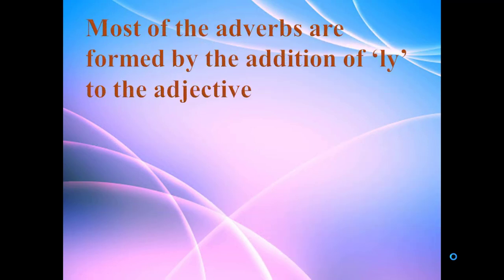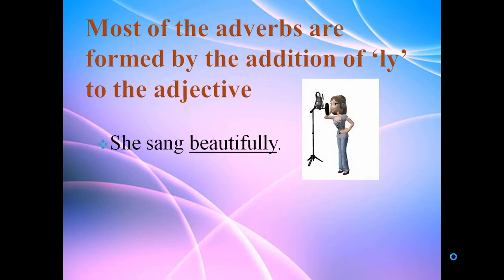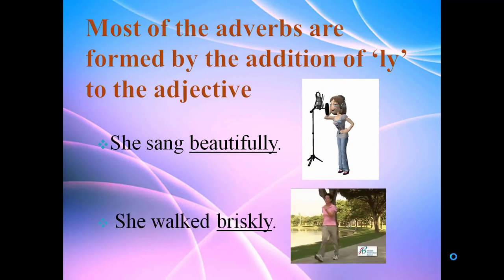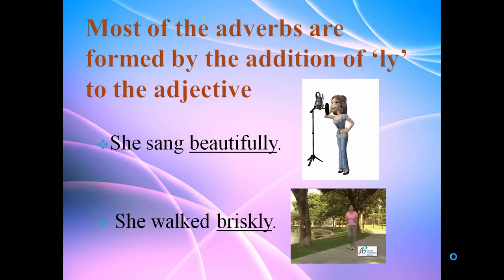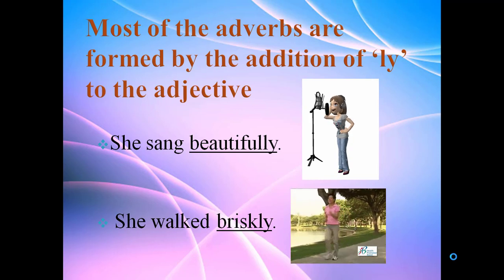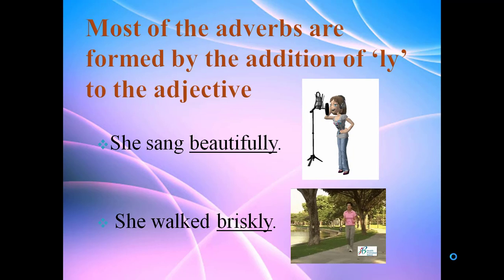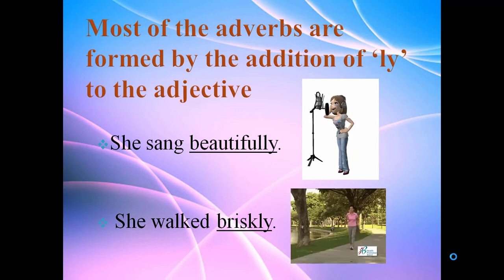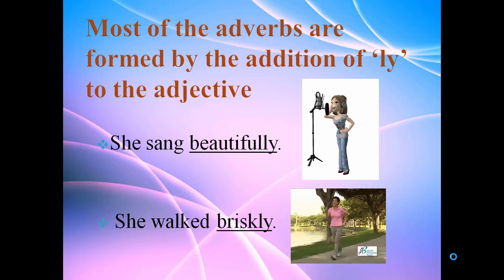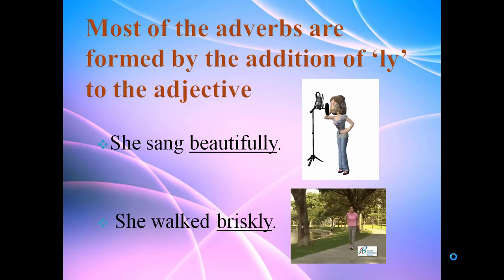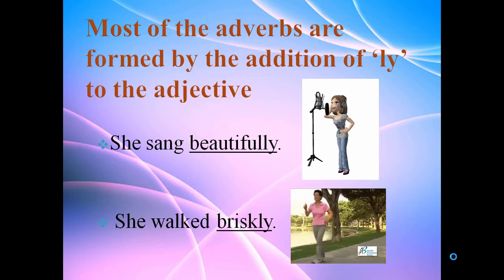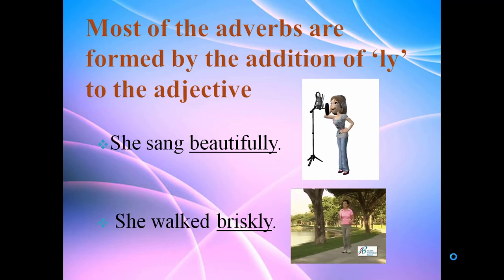Formation of adverbs: most of the adverbs are formed by the addition of -ly to the adjective. For example, she sang beautifully — beautifully is an adverb, beautiful is the adjective. When you add -ly to beautiful, it becomes beautifully. Also, she walked briskly — brisk is an adjective, and when we add -ly to brisk, it becomes briskly, an adverb.